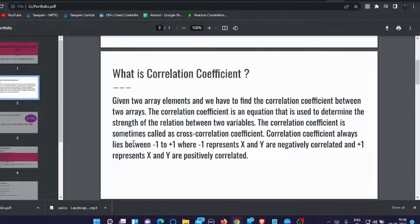The correlation coefficient is sometimes called as cross correlation coefficient. Correlation coefficient always lies between minus one to plus one, where minus one represents x and y are negatively correlated and plus one represents x and y are positively correlated.